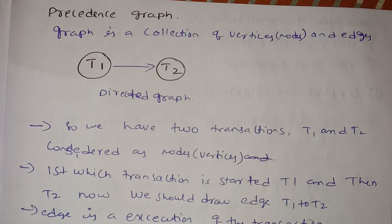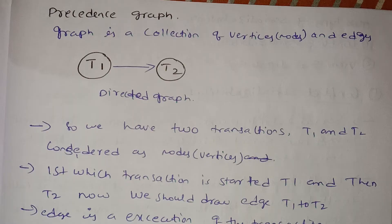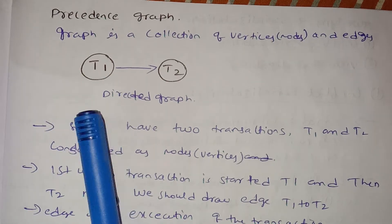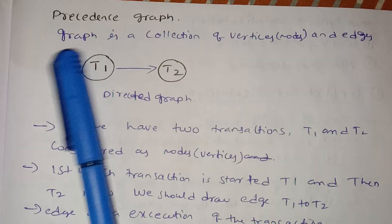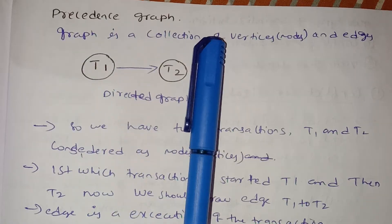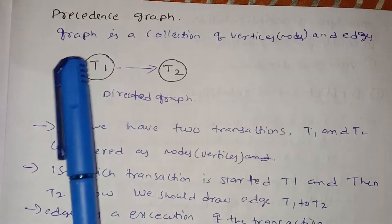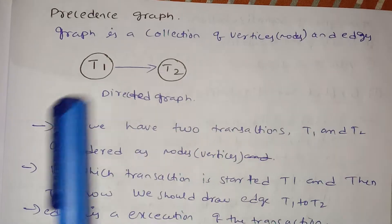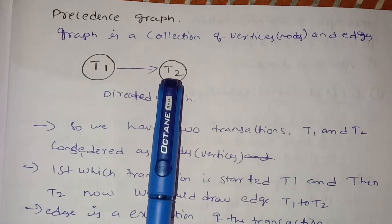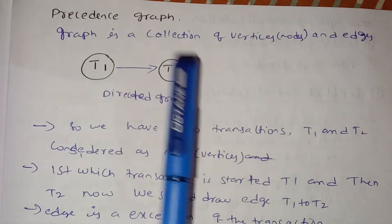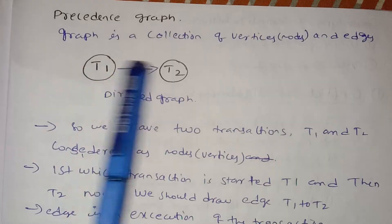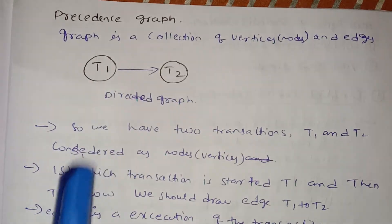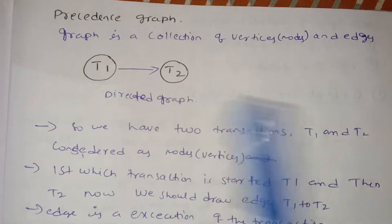Now we have a Precedence Graph. This graph is a collection of vertices and edges. The vertices are T1 and T2, and there is an arrow mark showing direction — so this is a directed graph.